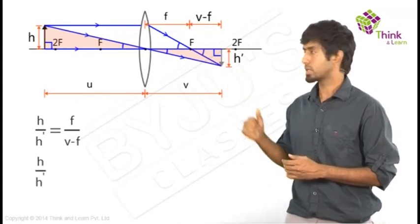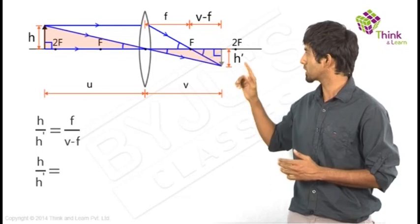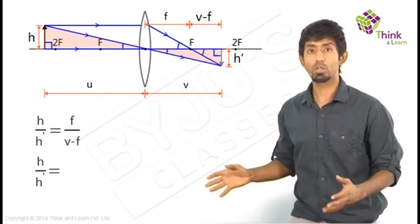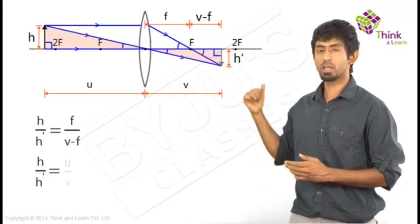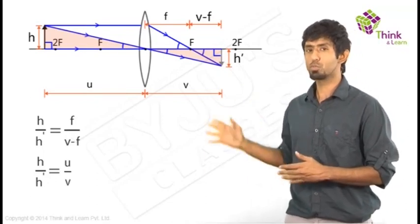The same H by H dash. And that's equal to what in this case. The sides are proportional, so it has to be equal to that side by this side. And what do you get now? What is that length? The entire length is U, and this entire length is V. So it's going to be just U by V.